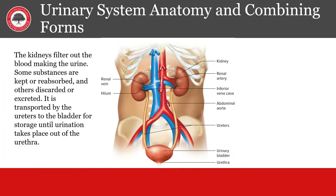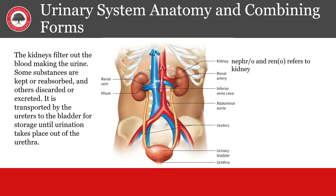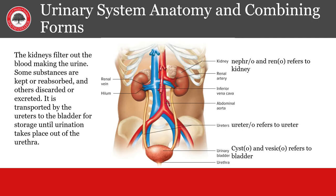Here are some important combining terms for the urinary system. Nephro and renal both mean kidney, while urethro refers to the ureters. Cysto and vesico refer to the bladder, and lastly urethro refers to the urethra.